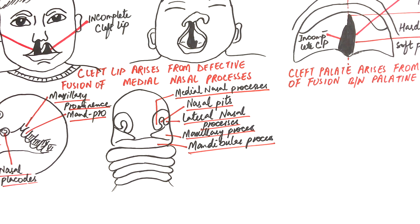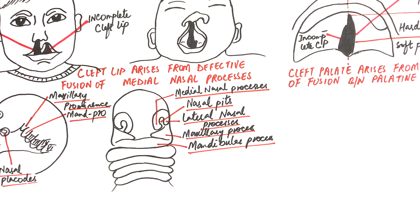However, if the cleft lip is at the lateral sides of the lip, or it is a unilateral cleft lip, then the cause is the defective fusion between the medial nasal processes along with the maxillary process. The cleft lip may either occur alone or in association with the cleft palate.